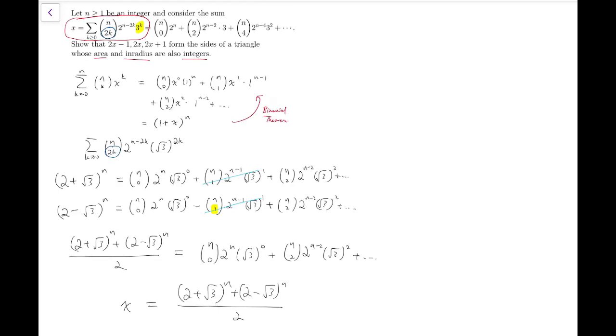Now let's analyze the second part. Those three expressions, 2x minus 1, 2x, 2x plus 1, form the sides of a triangle with area and inradius both integers.